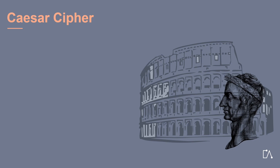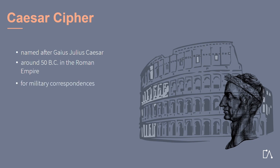A very famous cipher is the Caesar cipher, which was the favorite cipher of Julius Caesar, and hence became popular around 50 BC in the Roman Empire. Caesar used this cipher to keep his military correspondences a secret. As we will discuss later on, the Caesar cipher is a so-called substitution cipher.